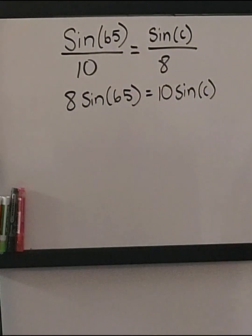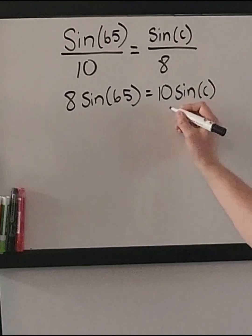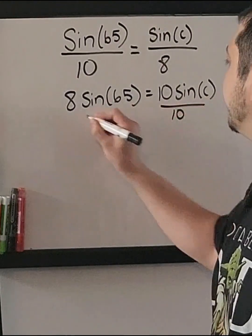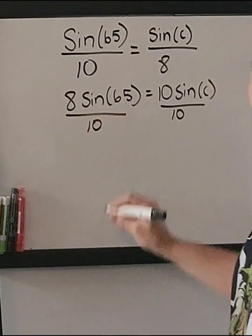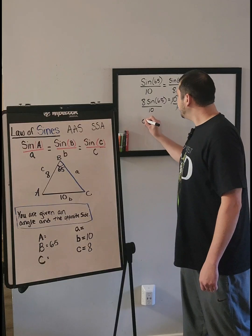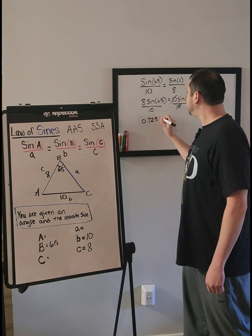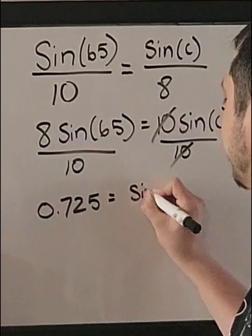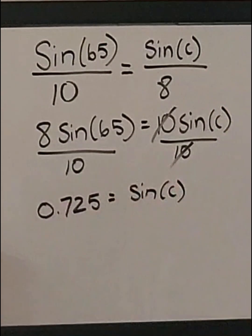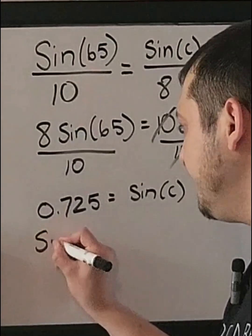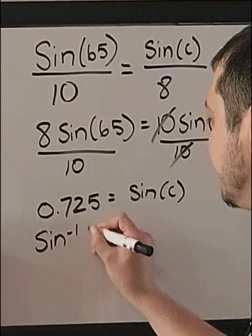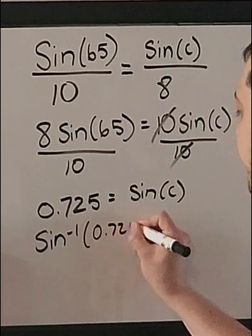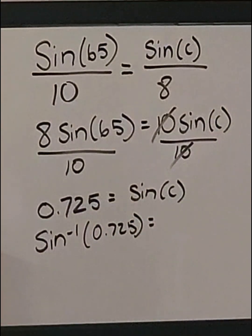We want the sine of C by itself, so we're going to divide by 10. When you put this in a calculator, 0.725 equals the sine of C. Now you need to take the sine inverse. Sine inverse of 0.725 will give you the angle C.